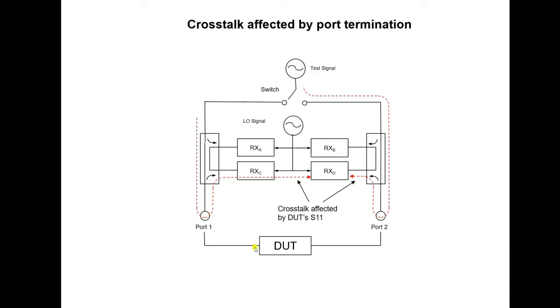As the test signal hits the device under test, some of it will get reflected back, obviously into this receiver here, but because of imperfections, some of that signal will leak through to the other side and appear as crosstalk. This crosstalk component will depend on the match of the device under test, the S11 of the DUT.